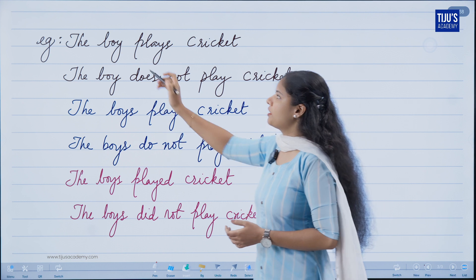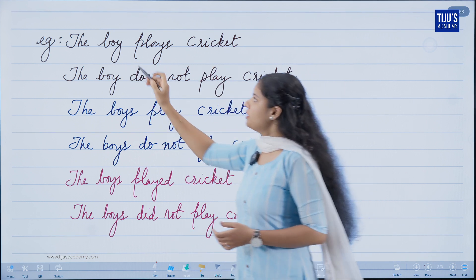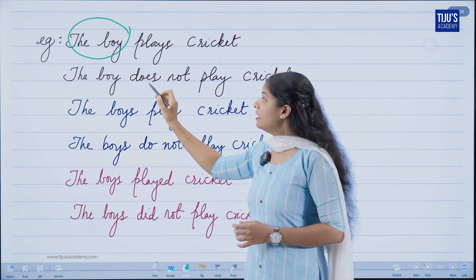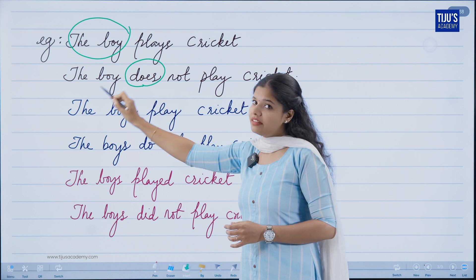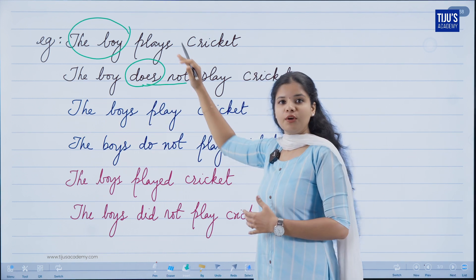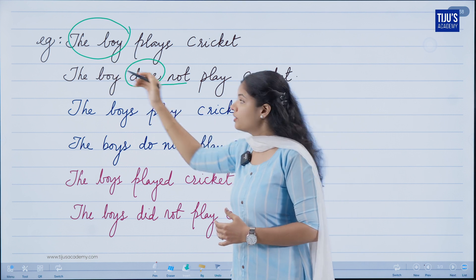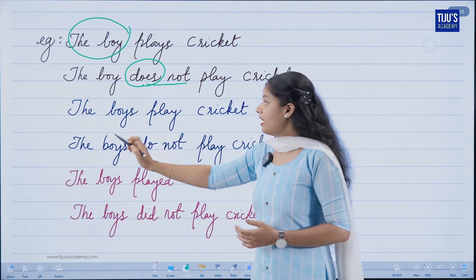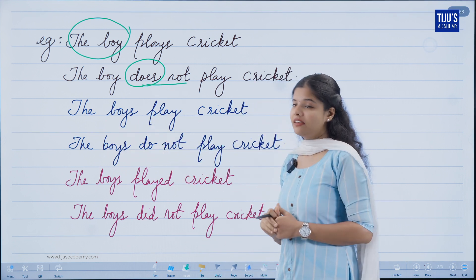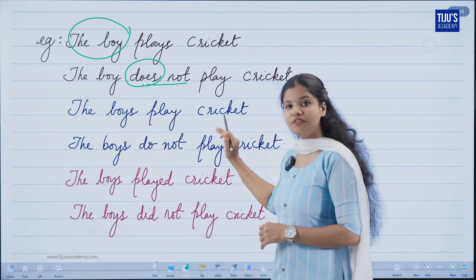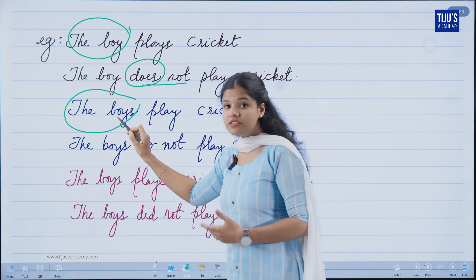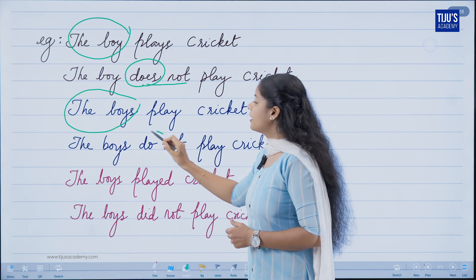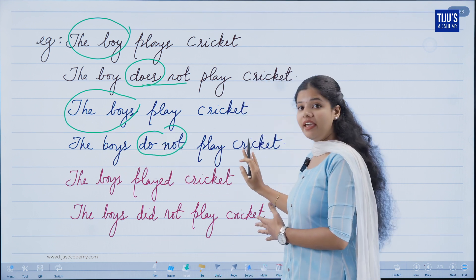Let's take a few examples. 'The boy plays cricket.' The subject 'boy' is singular, so we use does: 'The boy does not play cricket.' Next: 'The boys play cricket.' The subject 'boys' is plural, so we use do: 'The boys do not play cricket.' That's the transformation.